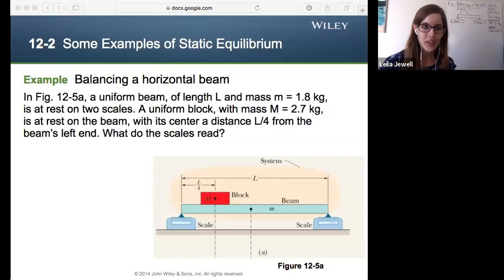Section 12.2 continued example balancing a horizontal beam. So in the figure a uniform beam of length L and mass 1.8 kilograms is at rest on two scales. The uniform block with mass big M is 2.7 kilograms is at rest on the beam with its center a distance L over 4 from the beam's left end. What do the scales read?